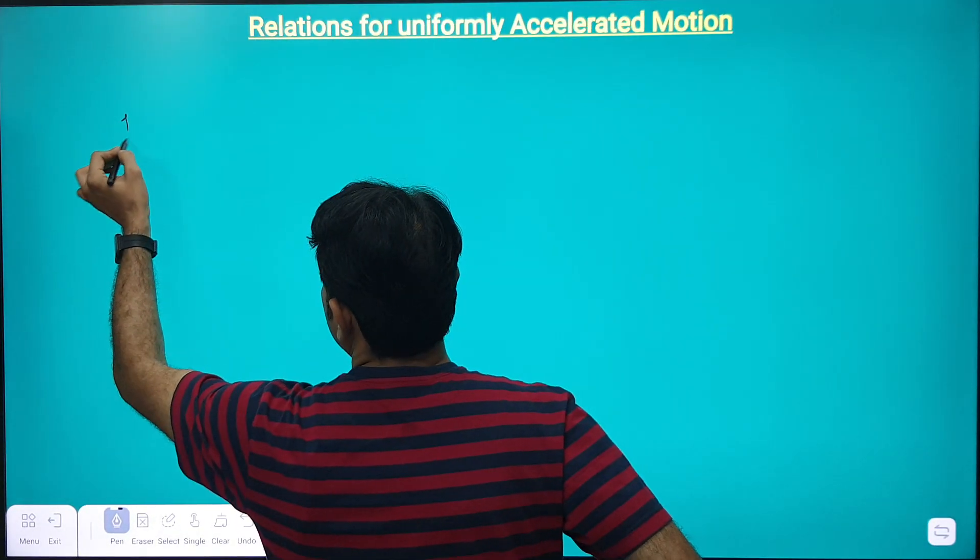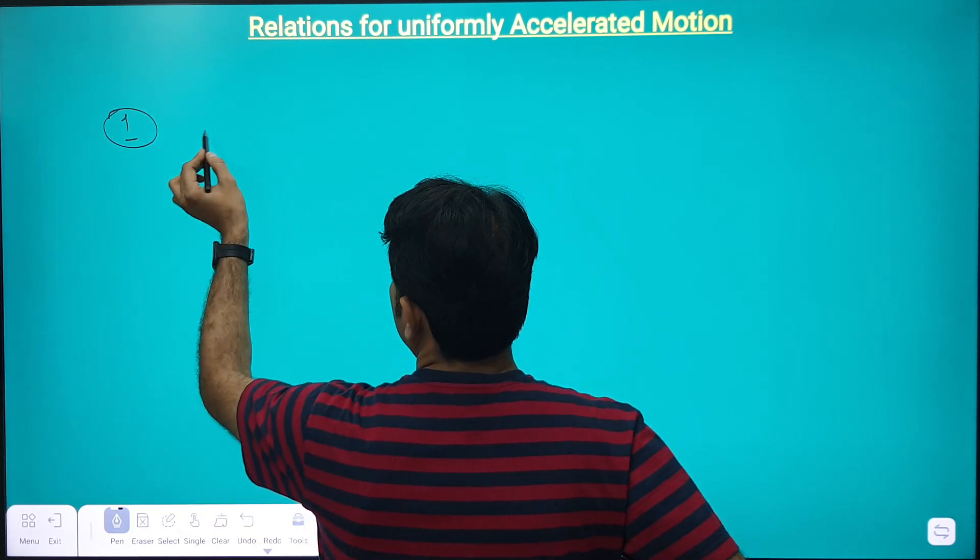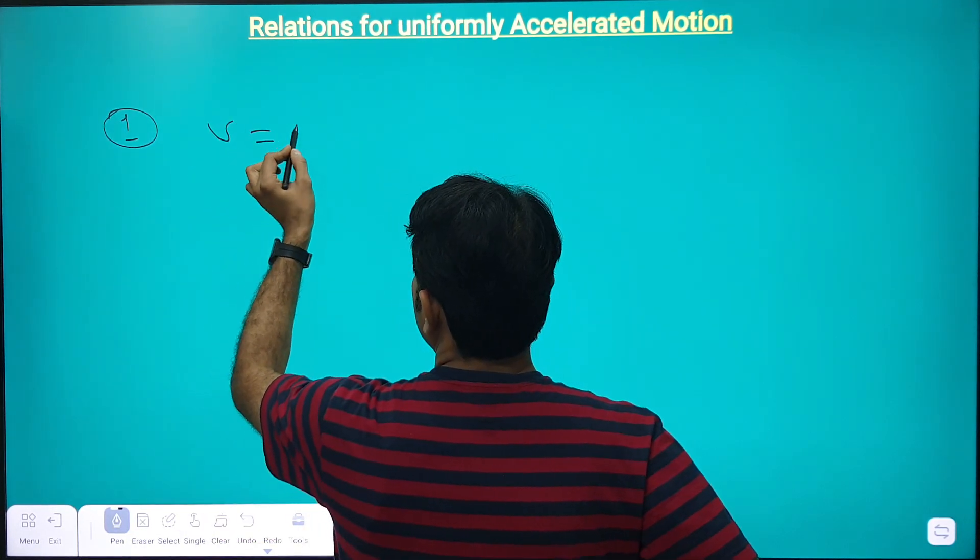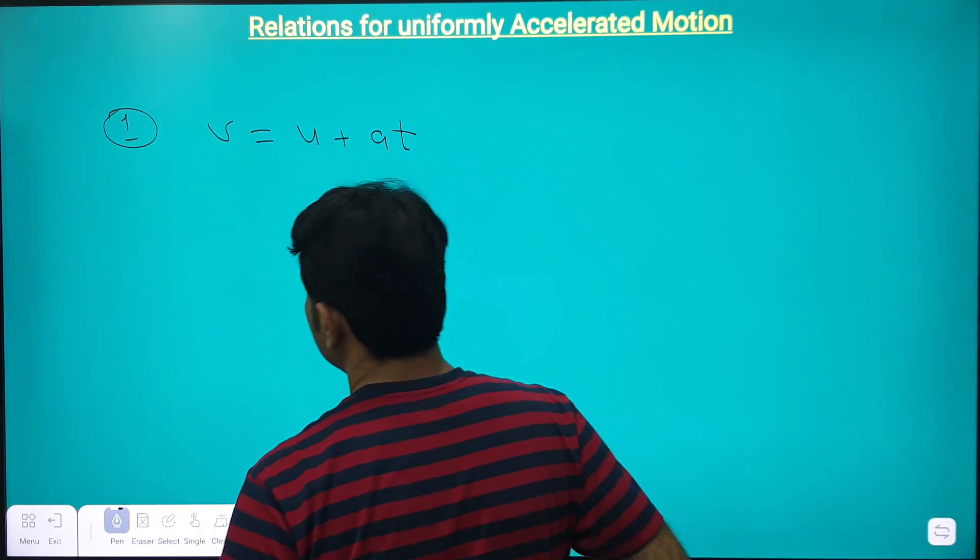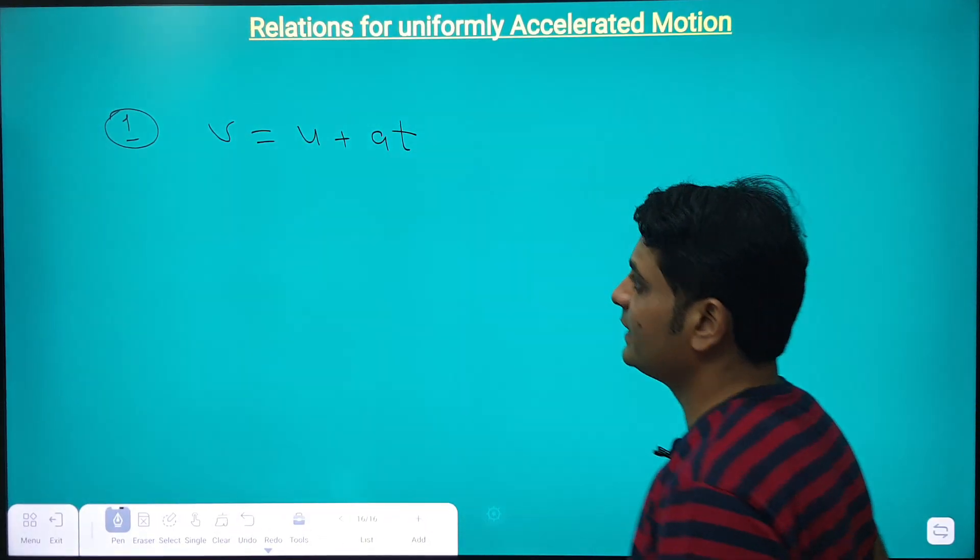The first relation is V is equal to U plus A T, where V is called final speed, U is the initial speed, A is acceleration, and T is time.